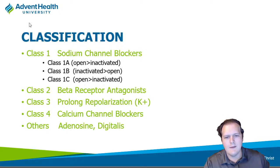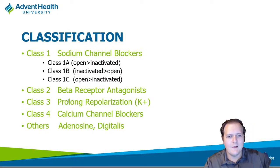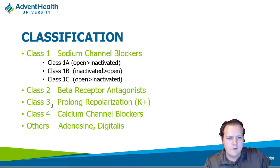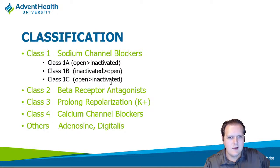Class three will be a new set of drugs — these block the outward flow of potassium, blocking the delayed rectifier channels, affecting the repolarization phase of the action potential. Class four will be another review: the non-dihydropyridine calcium channel blockers — basically verapamil and diltiazem. And then we have a few miscellaneous ones like adenosine and digoxin.